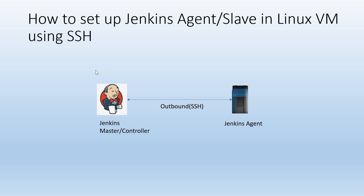In the diagram it is shown that there are two machines. In one machine, Jenkins master or controller is running. In the second machine we have to set up a Jenkins agent. For this setup, Jenkins master will initiate an outbound SSH connection to the Jenkins agent. So we have to generate a private key and public key inside the master, and we have to distribute the public key to the Jenkins agent. Once the public key is distributed, we can create a new node inside Jenkins master, and that node will use the private key we have created.